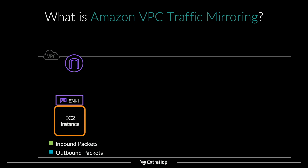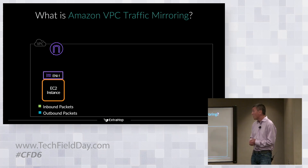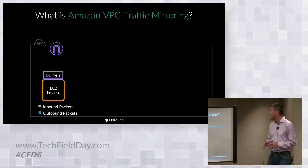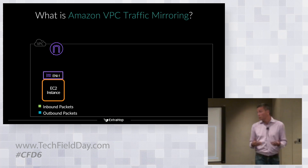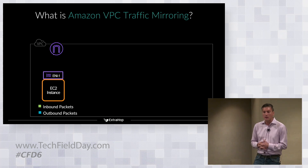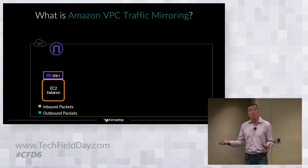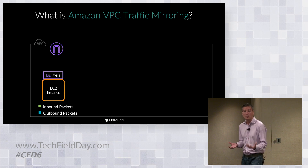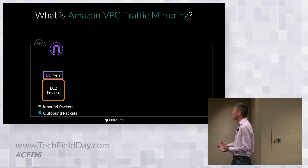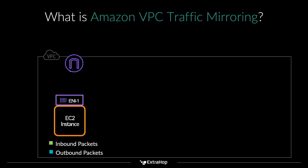I'm going to break down how it works specific to an AWS environment. This is actually an AWS slide when they announced the new traffic mirroring feature. Typically in a cloud environment, users would have to rely on logs, SIEM, and endpoint detection and response. The two data sources were either logs or endpoints. Network traffic was available, but it was cumbersome.